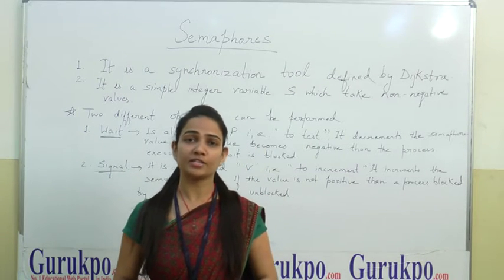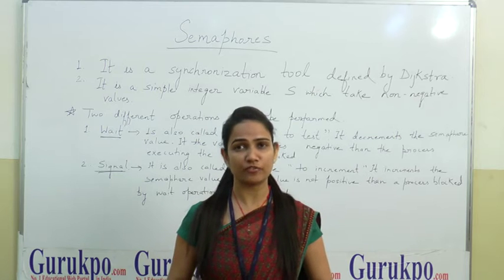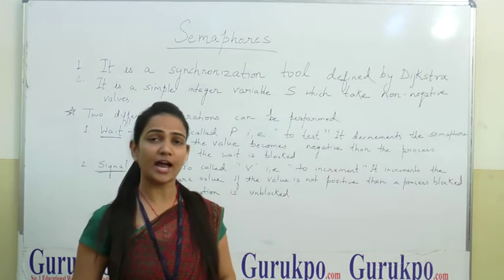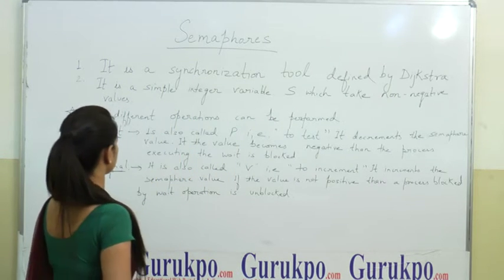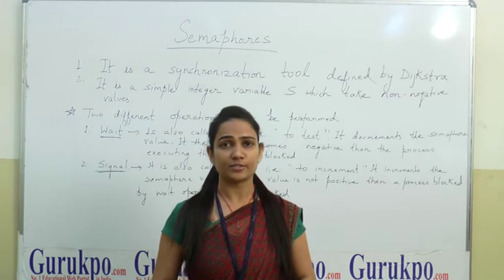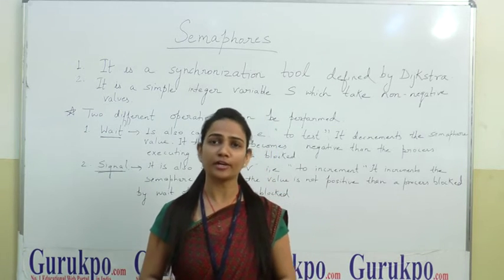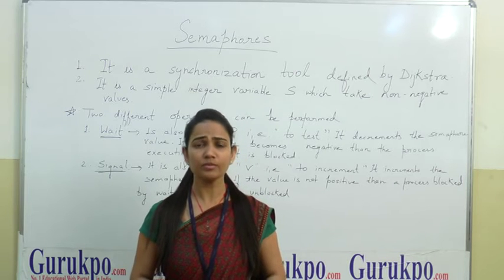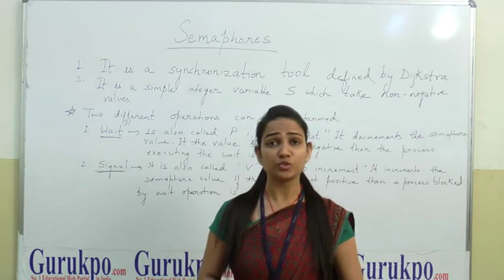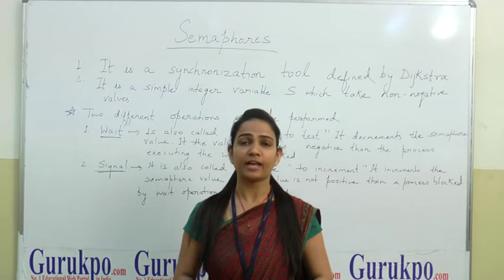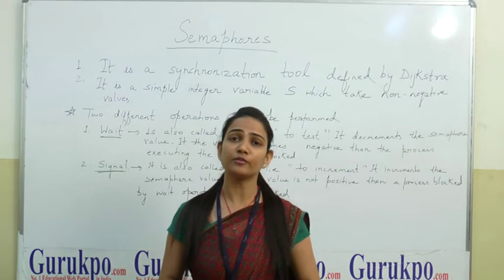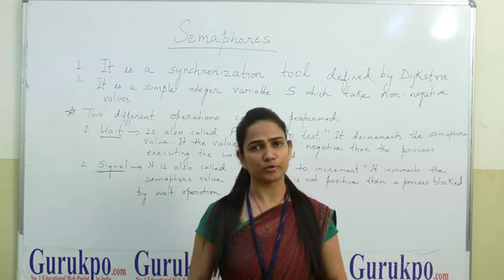Semaphore was developed by Dijkstra in 1965. It performs two basic operations: first is Wait, and second is Signal. Semaphore is denoted by a variable S, which takes only non-negative values. The Wait operation can also be denoted by P, which means to test. It decrements the Semaphore value, and when the value of Semaphore becomes negative, it blocks the process.